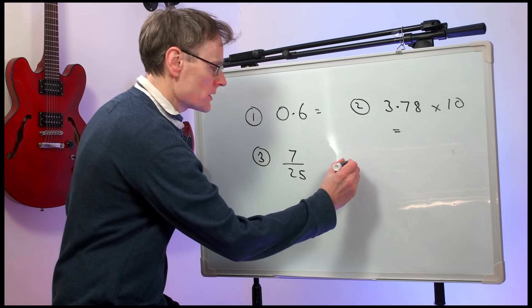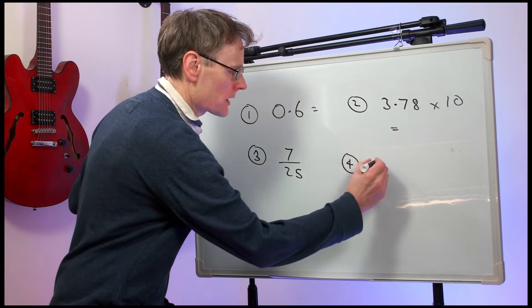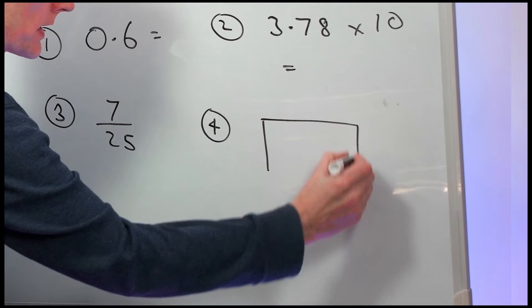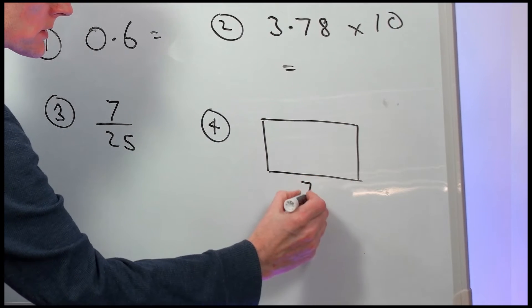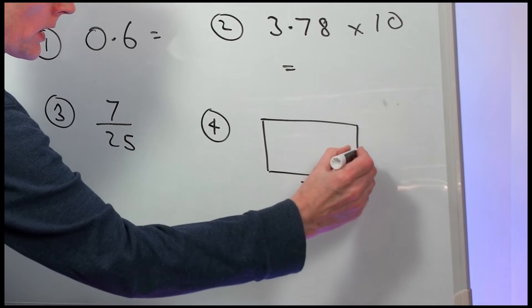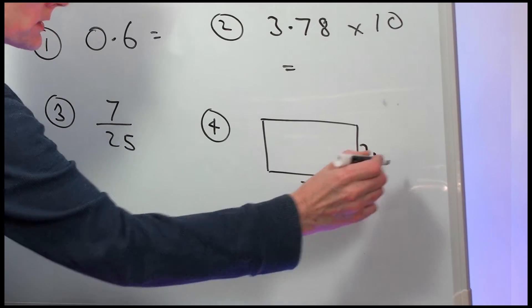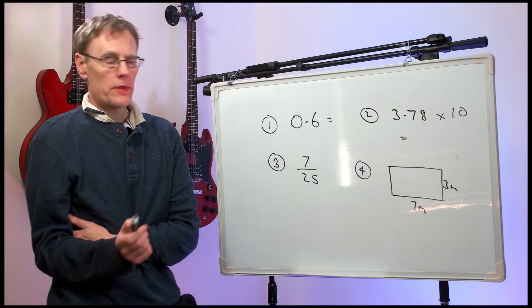Question four: What is the perimeter of this rectangle? We have a rectangle which is seven metres long and three metres wide.